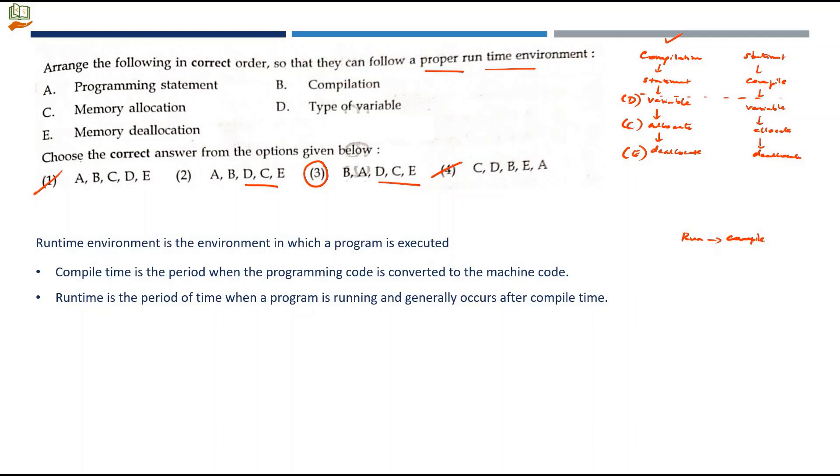If you go with the other interpretation, you can mark A, B, D, C, E as the answer. But when you take runtime environment perspective, when you run a program, the first work will be compile only. We are picking compilation process to be the first order. Compilation followed by programming statement, then type of variable, memory allocation, and memory deallocation.